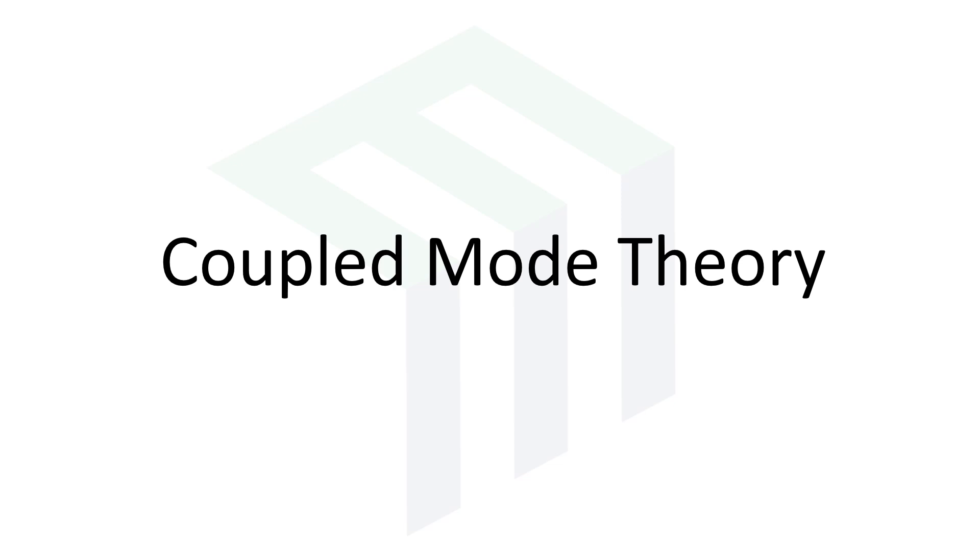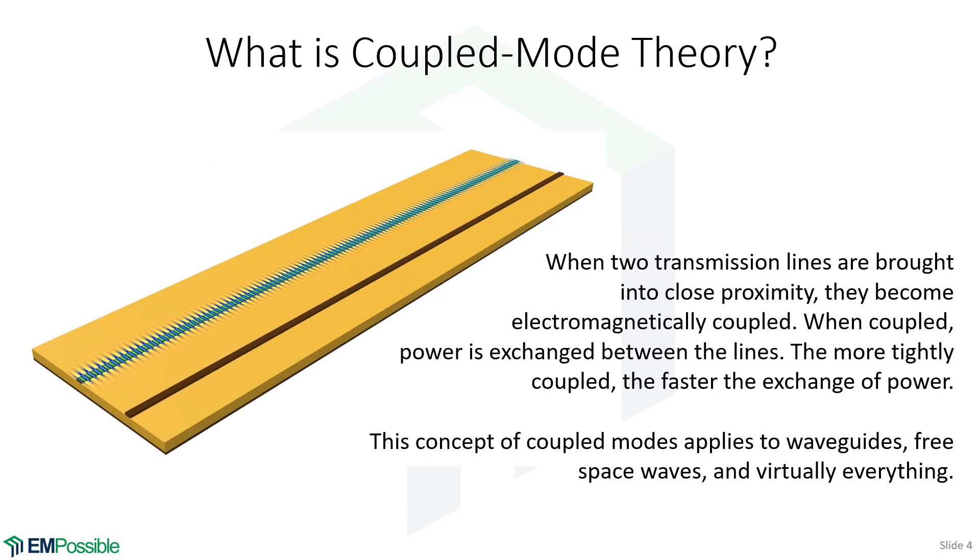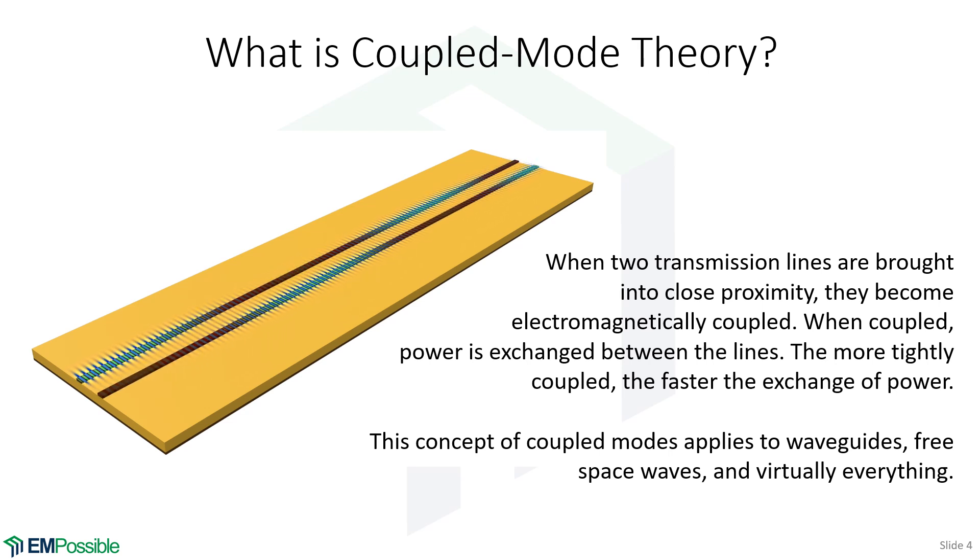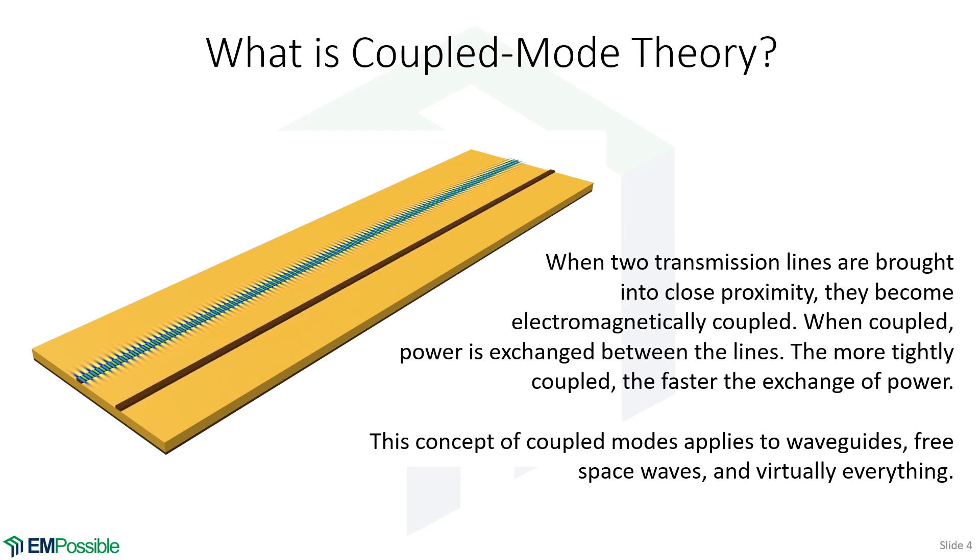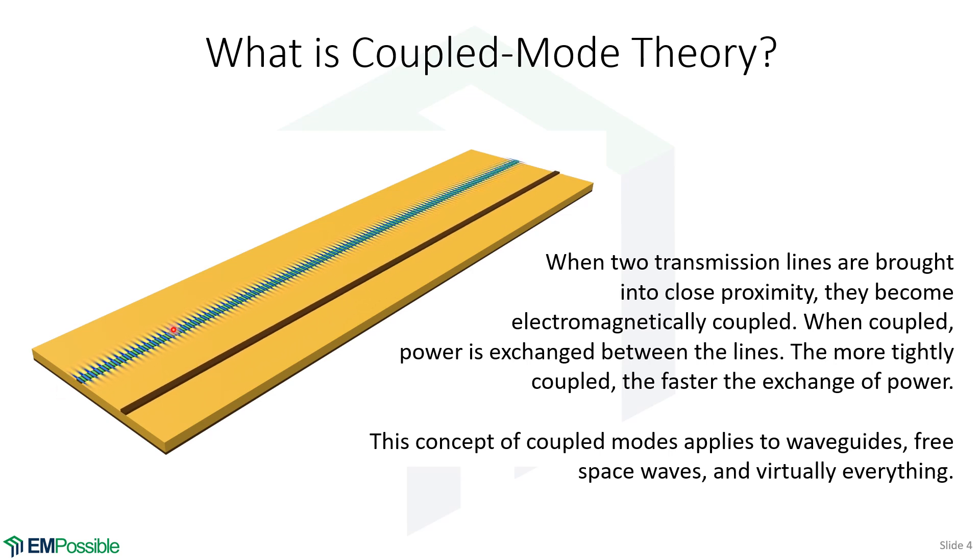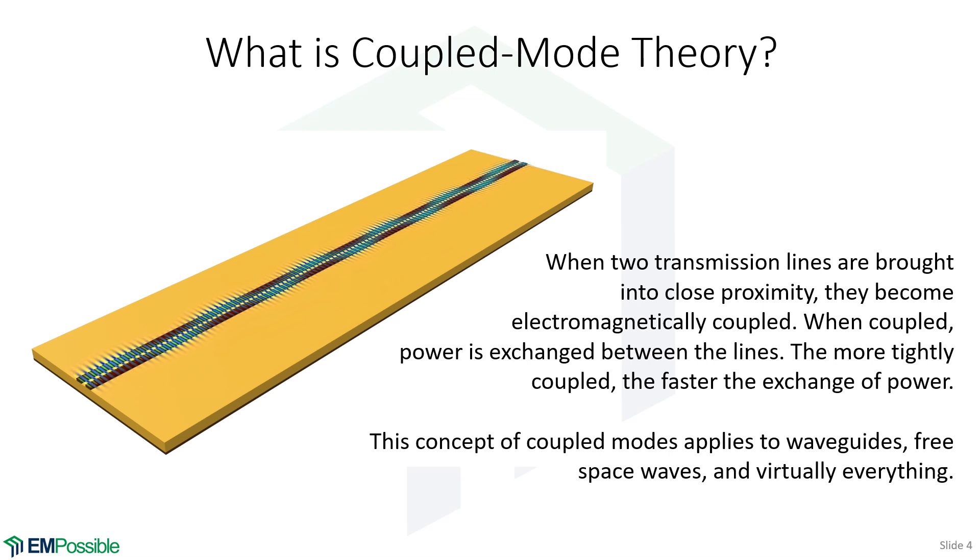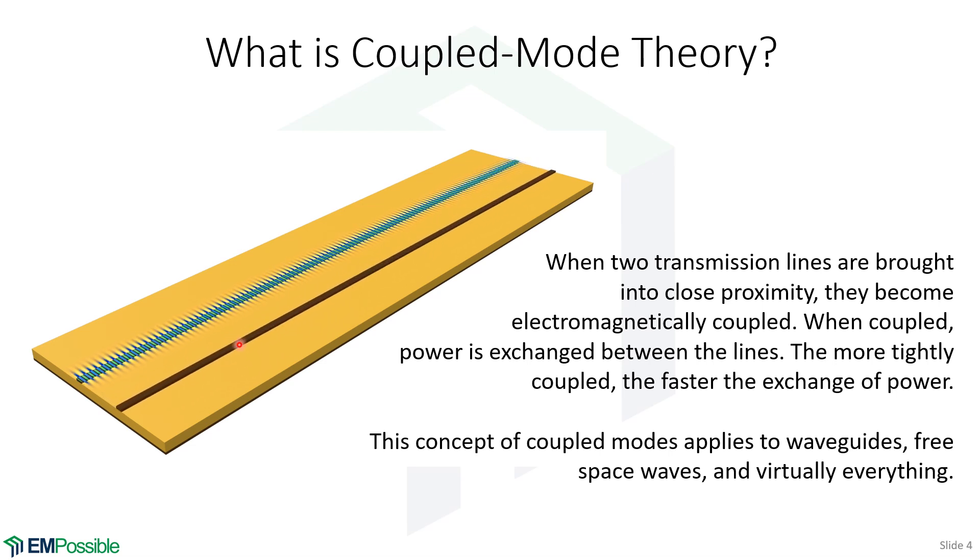Let's get into coupled mode theory. Coupled mode theory really can apply to any time we have two different electromagnetic modes in close proximity, and mode can mean a lot of different things. I think the simplest context is if we have two waveguides or two transmission lines in close proximity. So here we see a signal traveling from lower left to upper right. As the second line gets closer in proximity, at some point those two lines become electromagnetically coupled, and the wave from the first line starts spilling over and coupling into the second line.